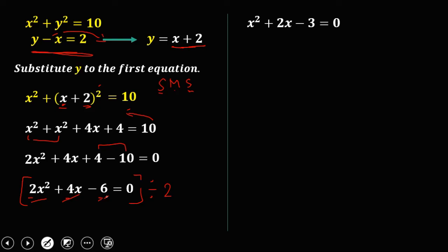So we can solve this quadratic equation now using this factoring. So factor of x squared, that's x times x. And factors of 3, that's 3 times 1.